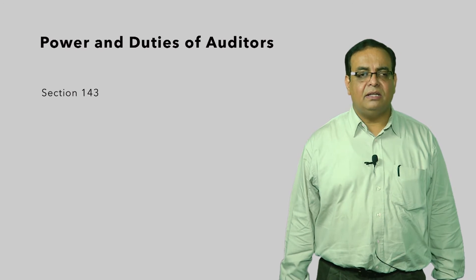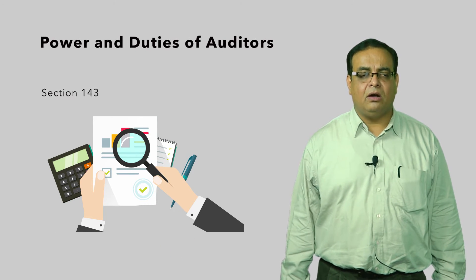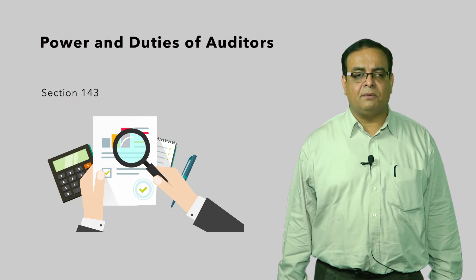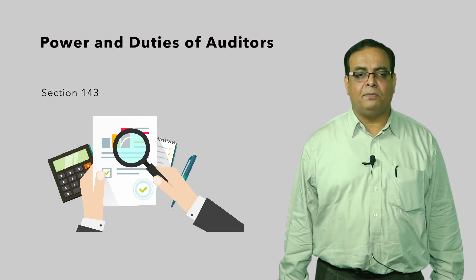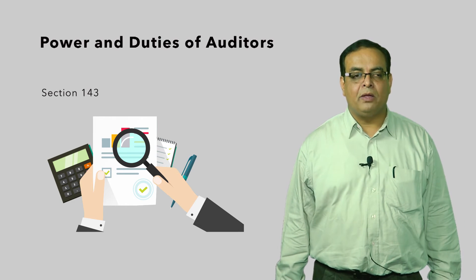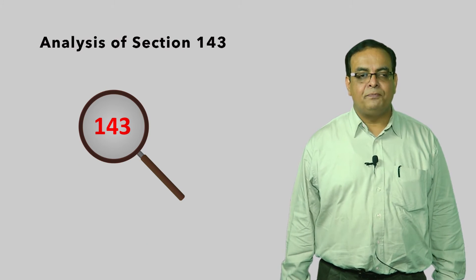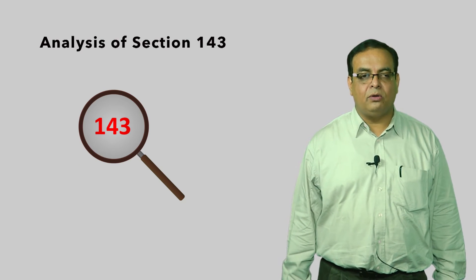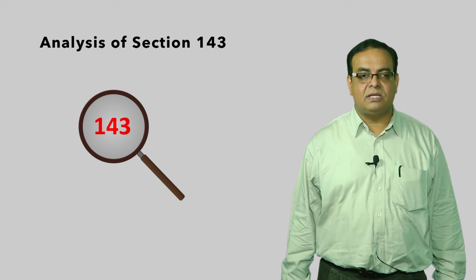Section 143 deals with the powers and duties of the auditor. It explains that every auditor of a company shall have a right of access at all times to the books of account and vouchers of the company, whether kept at the registered office or any other place, and shall be entitled to require from the officers such information and explanations as he may consider necessary for the performance of his duties. One issue is regarding the duty of the auditor to report to the central government for fraud by officers or employees — there is no materiality limit set in the act.